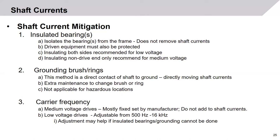A second method is utilizing ground brushes or rings — a carbon brush or a ring of carbon fiber that makes direct contact with the shaft to ground, directly moving shaft currents. However, this method requires extra maintenance to change and/or clean the brushes or rings. As this is an arcing device, it is not applicable for hazardous locations.